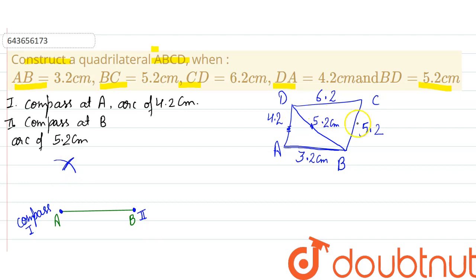Now from the rough diagram, you can observe that this point of intersection will be point D. So here you are getting the point D. Now you can join AD.